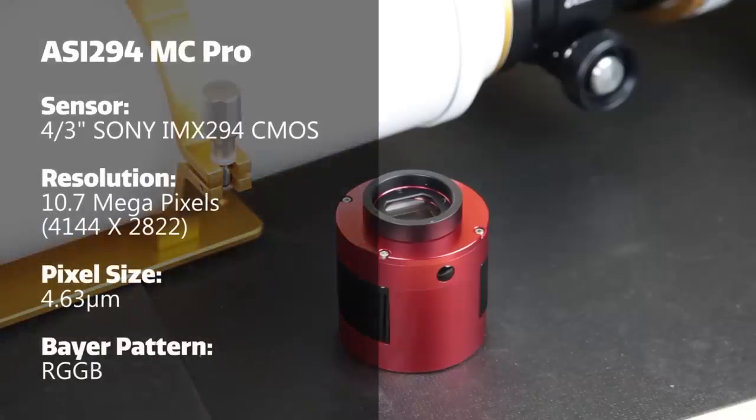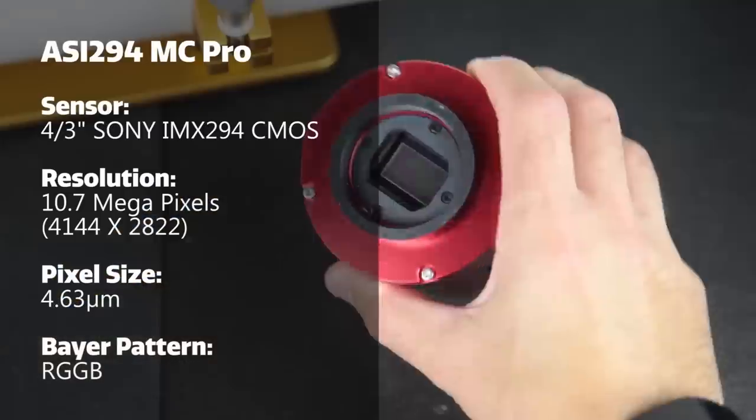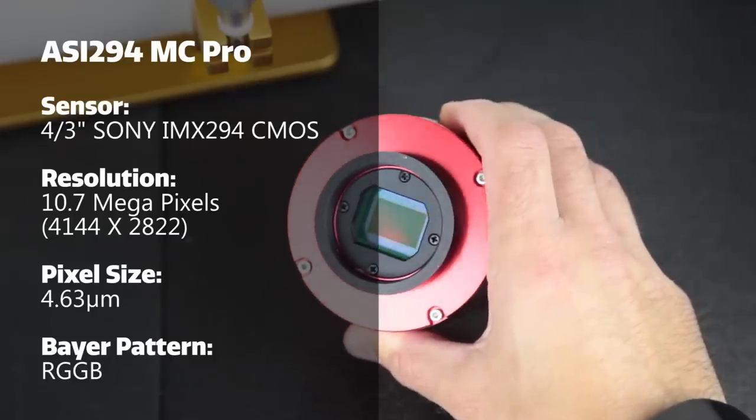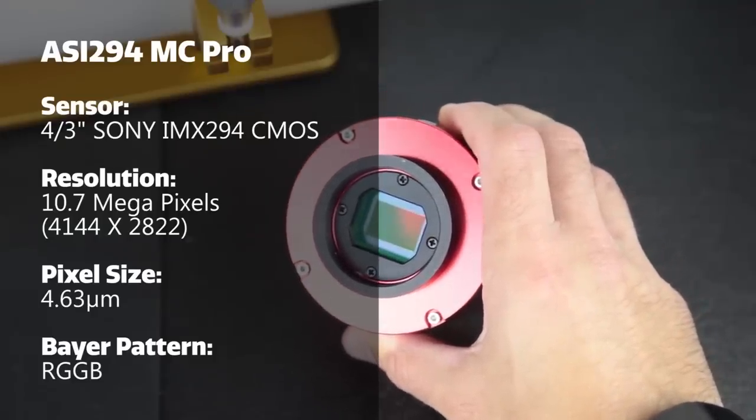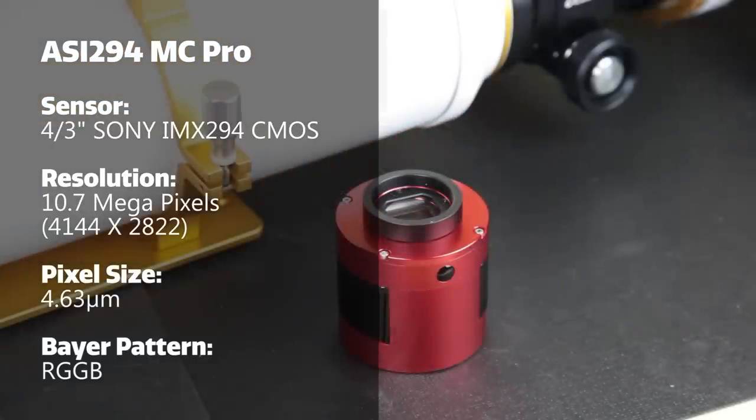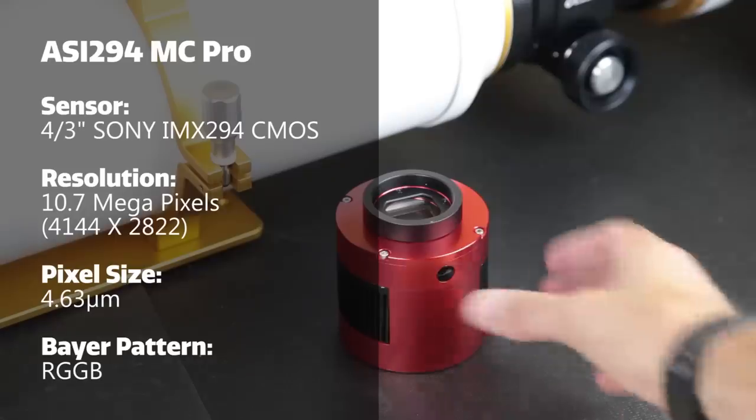The 294MC Pro houses a highly sensitive Sony IMX 294 CMOS color sensor. The Bayer pattern is RGGB. The sensor size is four thirds, so that puts out a native resolution of just over 4000 by almost 3000 pixels.